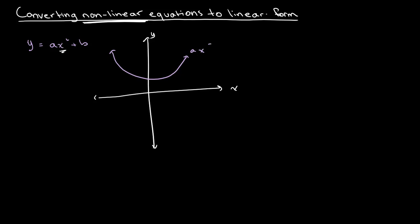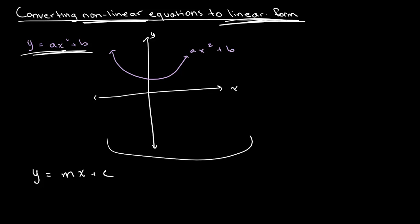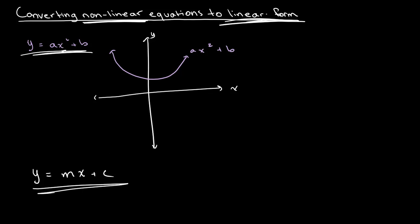This curve represents ax squared plus B. What we want to do is find a way to express this graph in linear form. We already know that any straight line graph follows the equation y is equal to mx plus C. On these axes, an equation in this form would be a straight line, depending on the values.